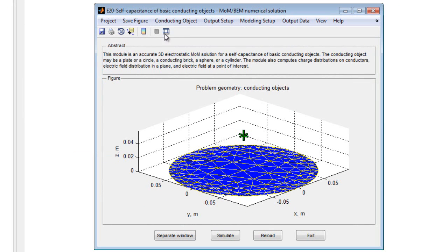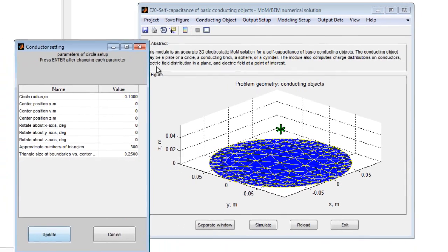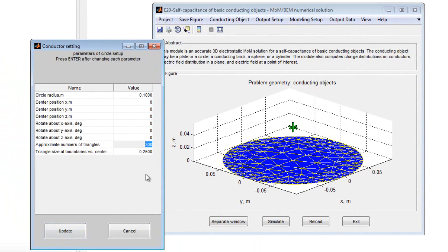The properties of the object, including object center, rotation about an axis, and the number of triangles used in the simulation can be modified as necessary.